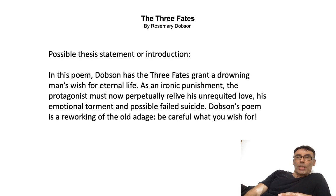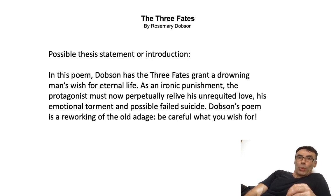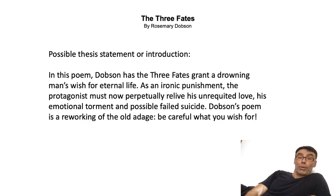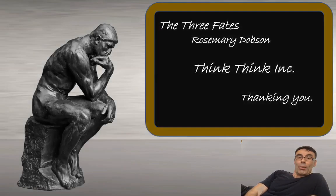To wrap this up, I'd put it into a thesis statement that looks something like this: 'In this poem, Dobson has the three fates grant a drowning man's wish for eternal life — an ironic punishment, as the protagonist must now perpetually relive his unrequited love, his emotional torment, and his possible failed suicide.' Dobson's poem is a reworking of the old adage: be careful what you wish for. I hope you found that useful. If you have a different interpretation, leave it in the comment box below. Ta-ta for now.